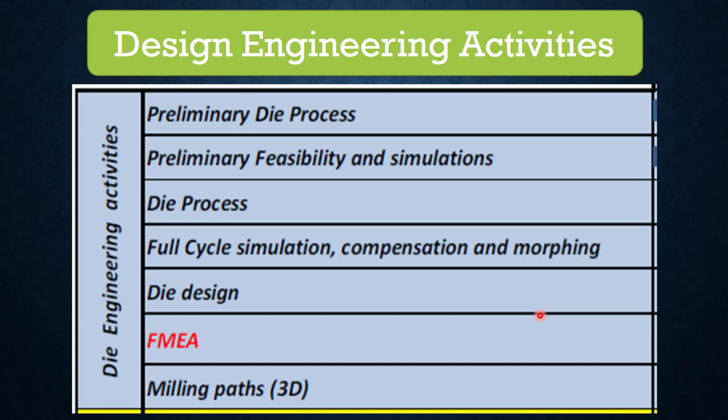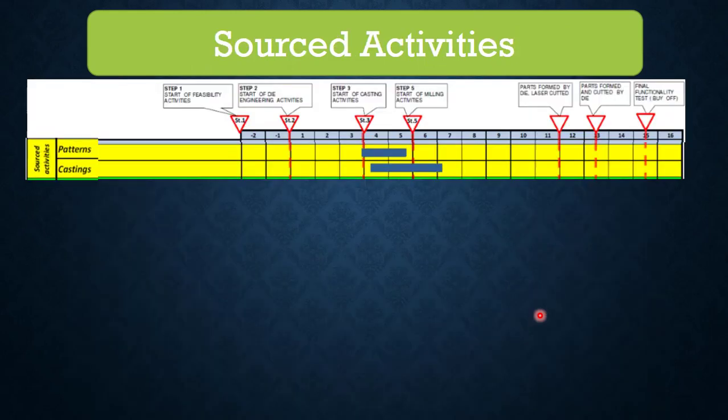As we covered die design engineering details in a previous playlist, here is a quick summary. Number one: preliminary die process — a high level study. Number two: preliminary feasibility and simulation. Number three: die process finalization. Number four: full cycle simulation, compensation and morphing. Number five: die designing. Number six: FMEA to identify failure modes. Number seven: milling parts for 3D machining.